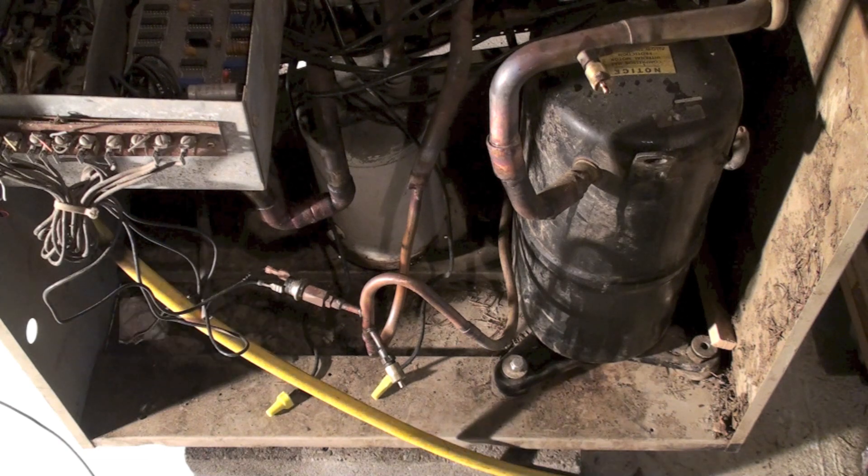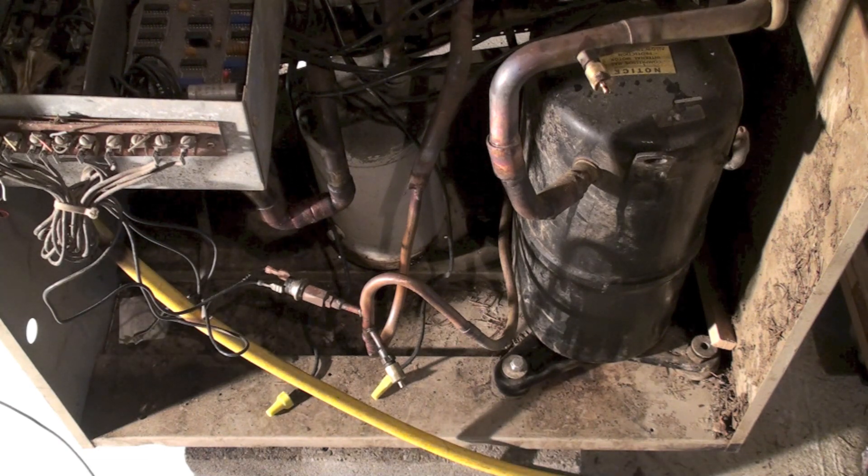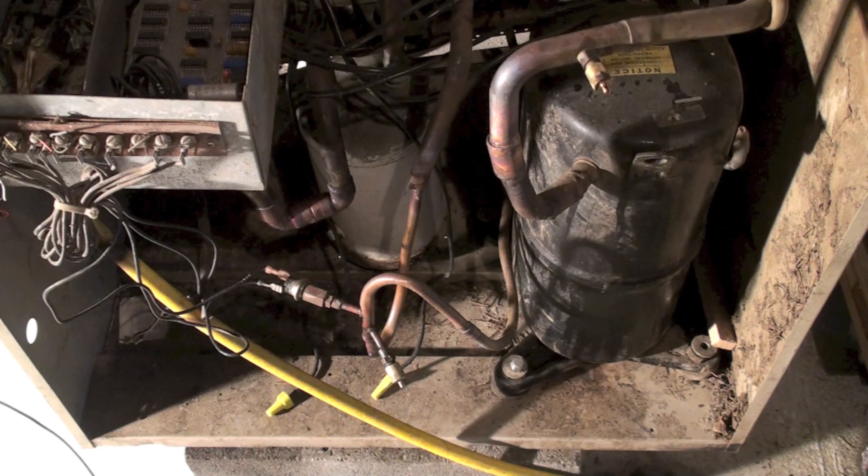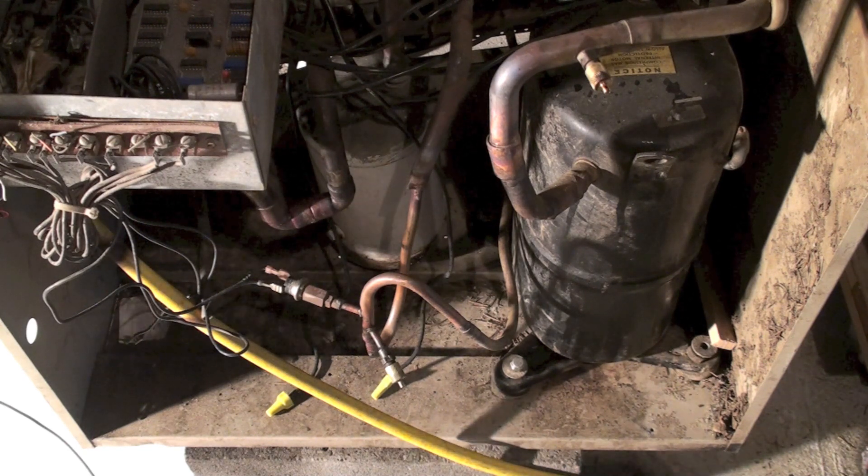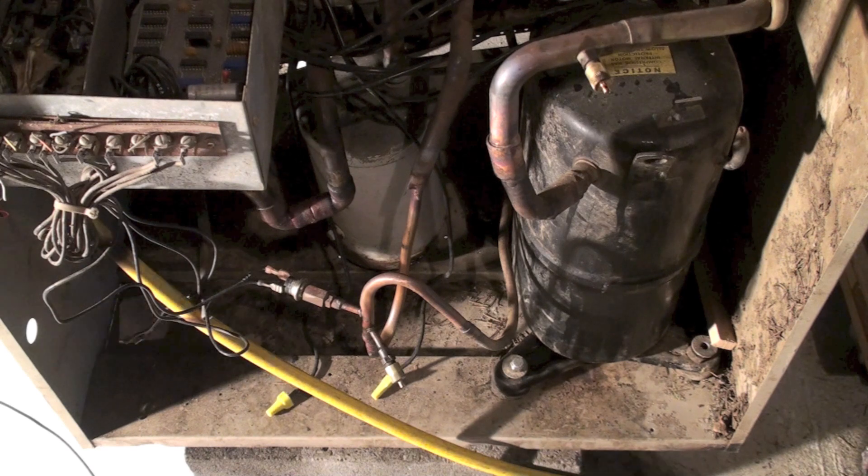I could take the outdoor coil and I could isolate it. That simply means I'm going to cut it out. I'm going to cut the tubing on it, I'm going to crimp one side and put a pressure tap on the other side.